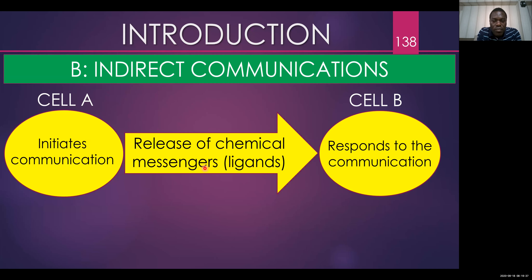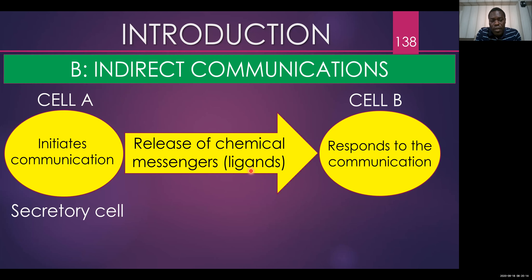For indirect communication, communication is made possible by the release of chemical messengers. The cell that initiates communication releases chemical messengers — those are the chemicals that will move to the cell that responds. The term given for chemical messengers is ligand, so a ligand is a chemical messenger. The cell that initiates communication is called the secretory cell, because it is the one that releases the chemical messenger.